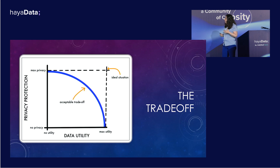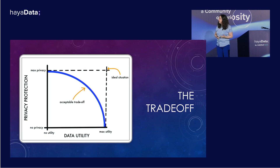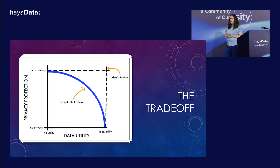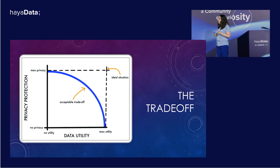The ideal solution would be to retain maximum utility and have maximum privacy. But obviously, that's not possible because when you take care of privacy, you usually degrade the utility of the data. In reality, there is some acceptable trade-off that gives you something in between. And what this trade-off is depends on the industry, so there are different metrics for different industries.